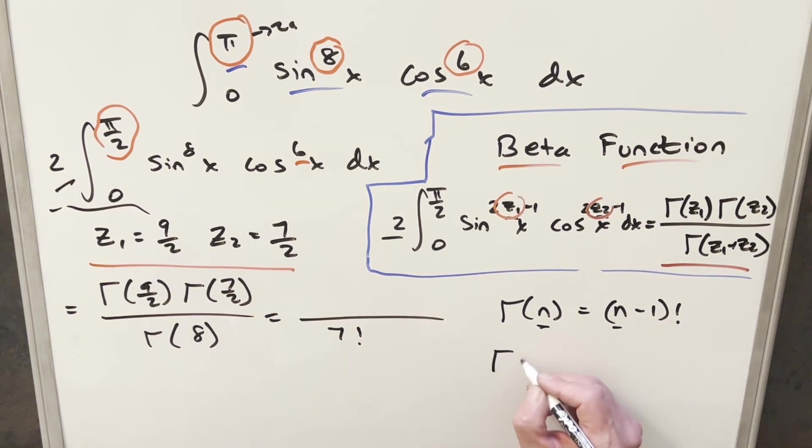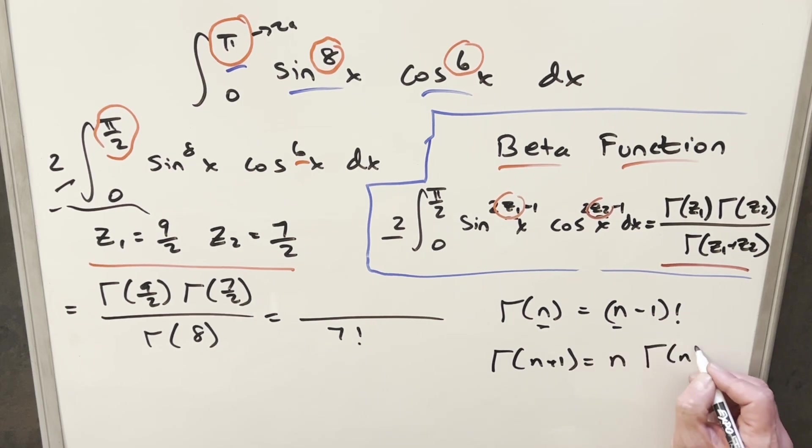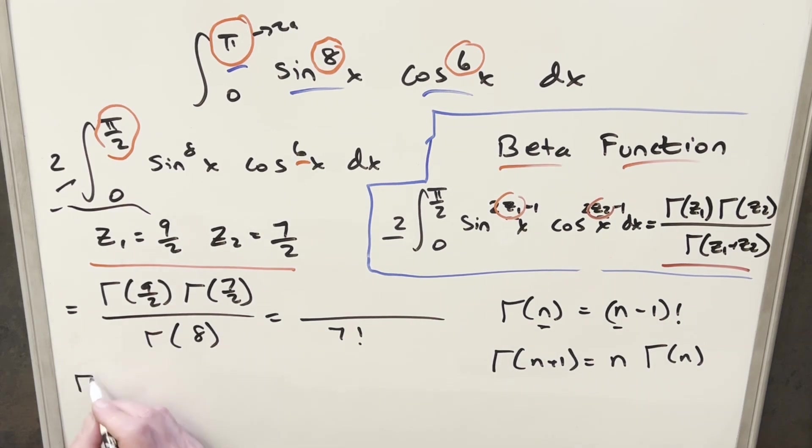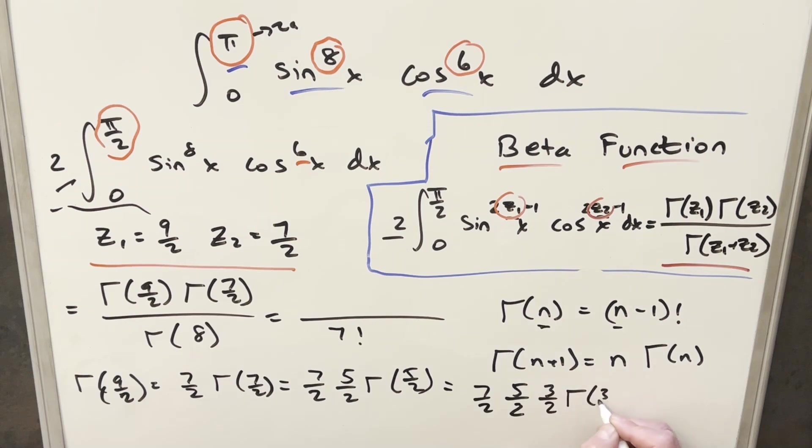And we have another formula we can use. We can use gamma of n plus 1 equals n times gamma of n. So looking at gamma of 9 halves, we can rewrite this as 7 halves times gamma of 7 halves. But then we can just repeat this over and over again. For gamma of 7 halves, I can write this as 5 halves times gamma of 5 halves. And we can do this again. So for gamma of 5 halves, I can write this as 3 halves, gamma of 3 halves.